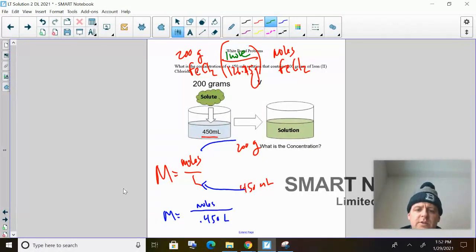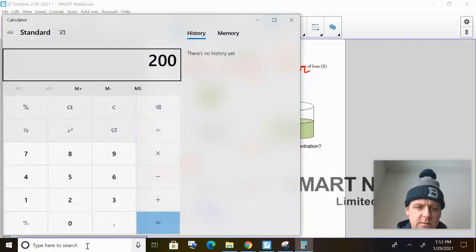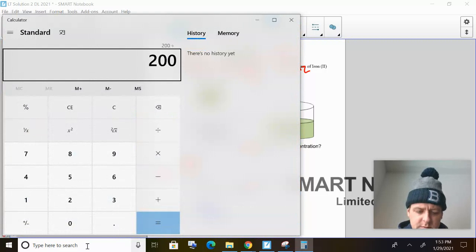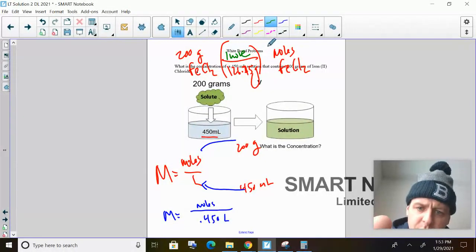So I got 126.75 grams for every one mole. So 200 divided by 126. 1.58. I got 1.58 moles. Sweet. Which makes sense because if one mole is 126, well, so bam, now I can plug that in.